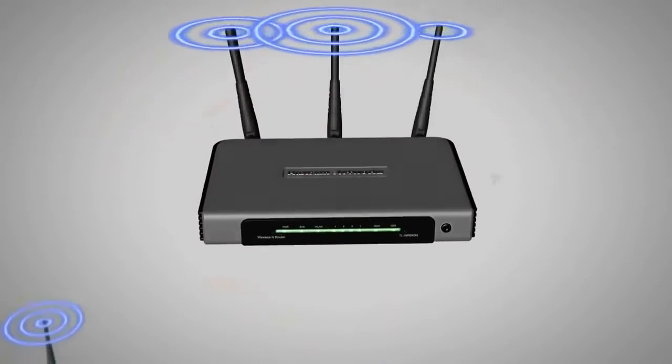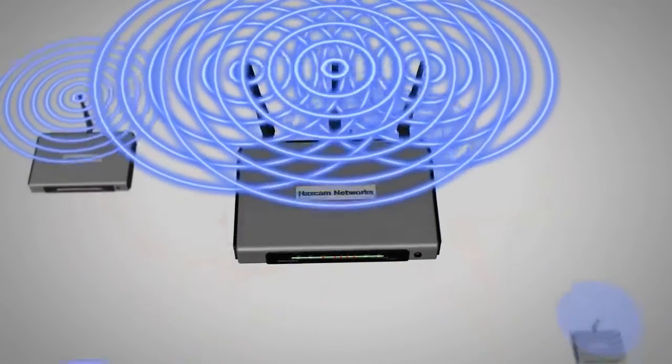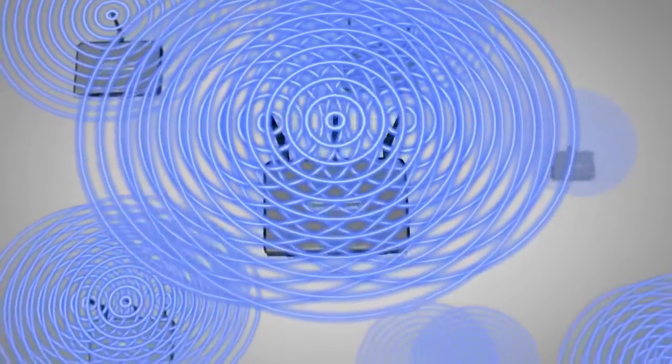Traditional Wi-Fi access points flood transmissions in all directions. Signal that goes anywhere except to the intended receiver is just interference.